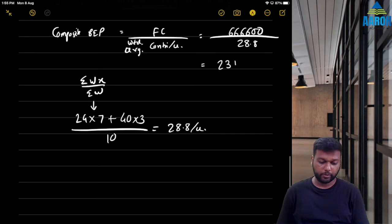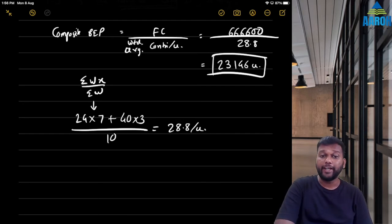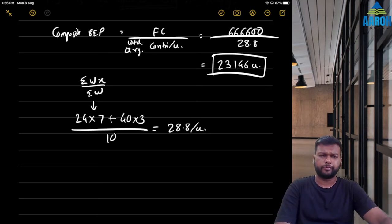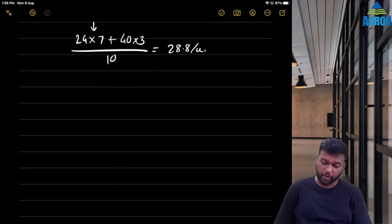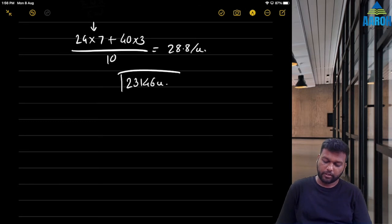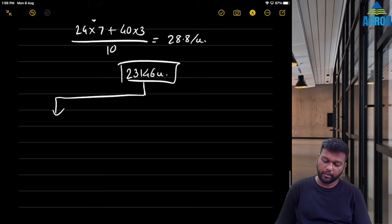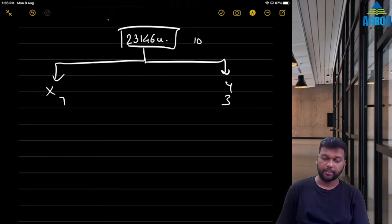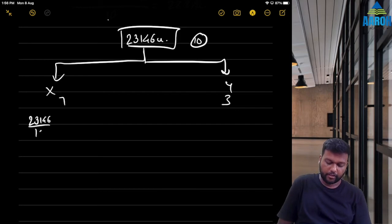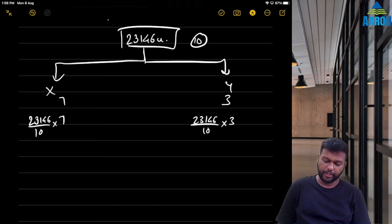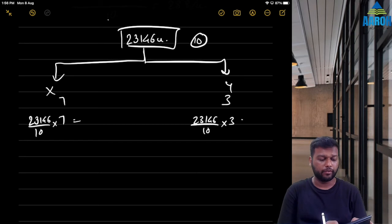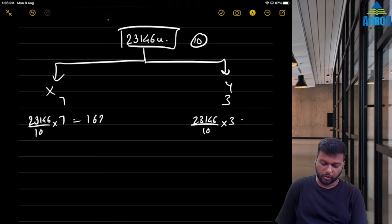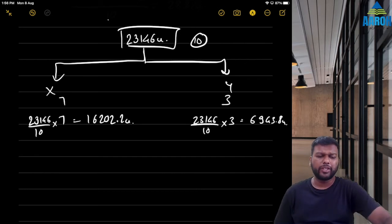Composite BEP = 6,66,600 ÷ 28.8 = 23,145.8, approximately 23,146 units. Now divide this among X and Y in the ratio 7:3. BEP for X = 23,146 × 7/10 = 16,202.2 units. BEP for Y = 23,146 × 3/10 = 6,943.8 units.